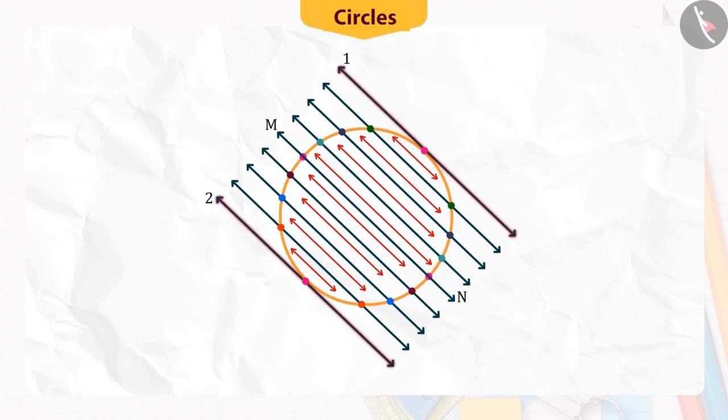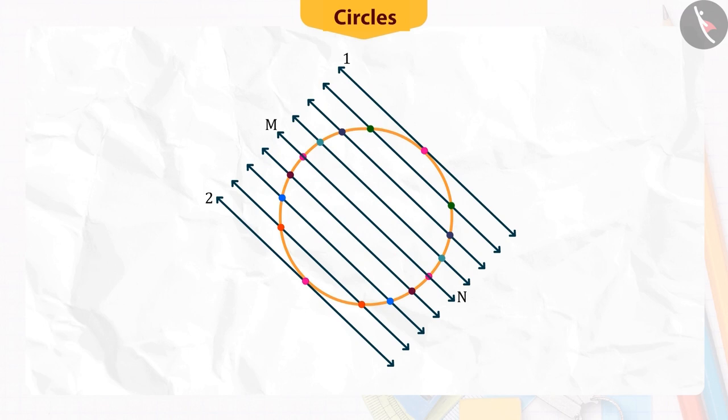In case 1 and 2 of secant, the distance between the points becomes 0, which means that both the points coincide. On observing, you will find that in this situation, line 1 and 2 are two tangents parallel to the secant MN.